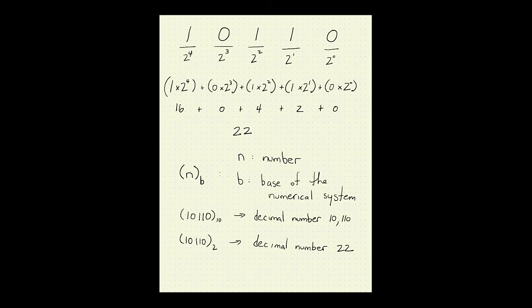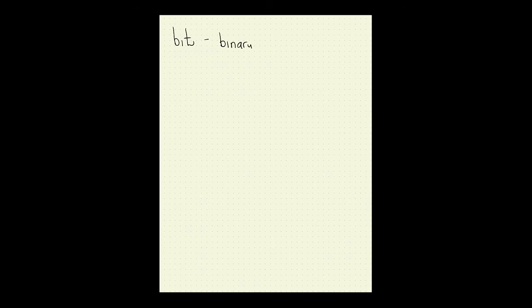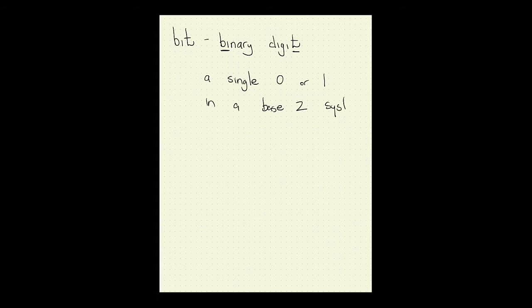The term 'bit' is used in the context of computers or binary numbers. A bit is short for a binary digit — a single zero or one in a base 2 system. We'll come back to that term a couple of times throughout this lecture and the next, but now let's talk about some of the ways that computers encode information in bits.